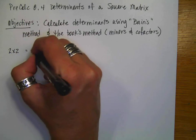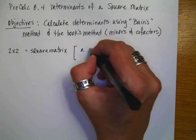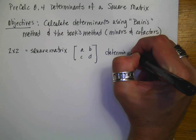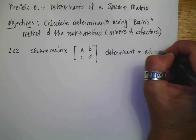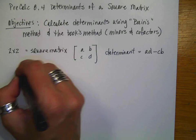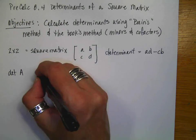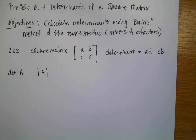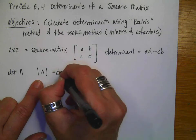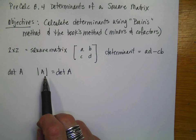A 2 by 2 is considered a square matrix because it is a square and its dimensions are the same. So maybe I have A, B, C, and D. Just for review, the determinant is equal to A times D minus C times B. Sometimes you'll see it written as 'det of A', but oftentimes it's written like an absolute value — although when we're talking about matrices, that does not mean absolute value. That means calculate the determinant of A.